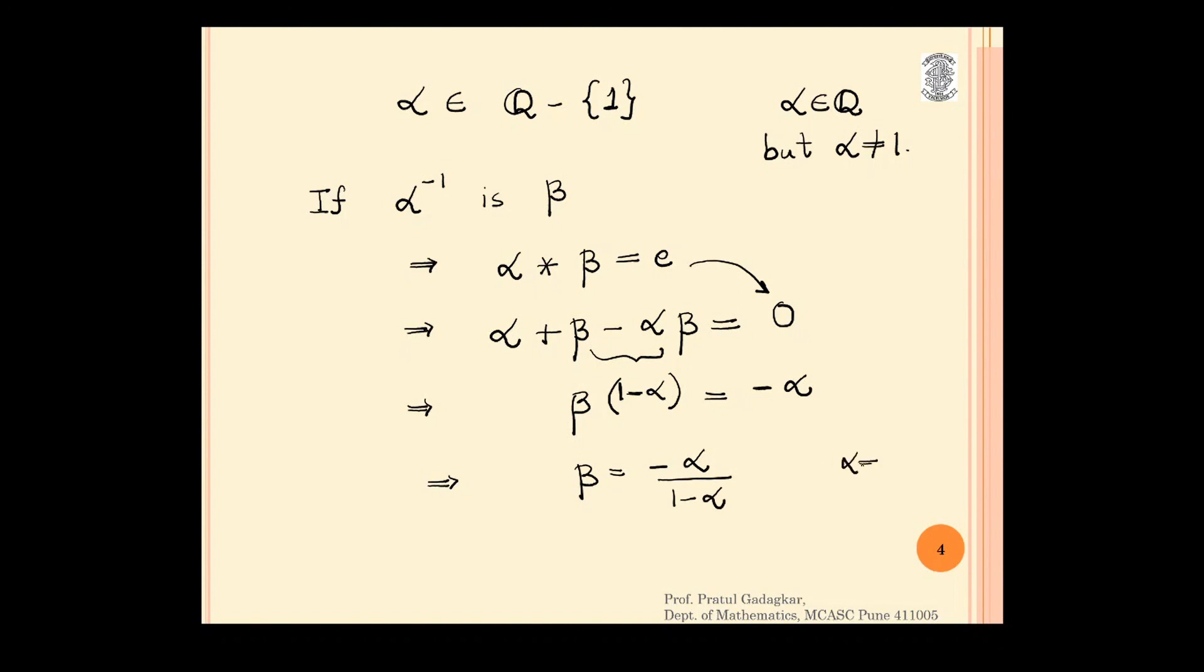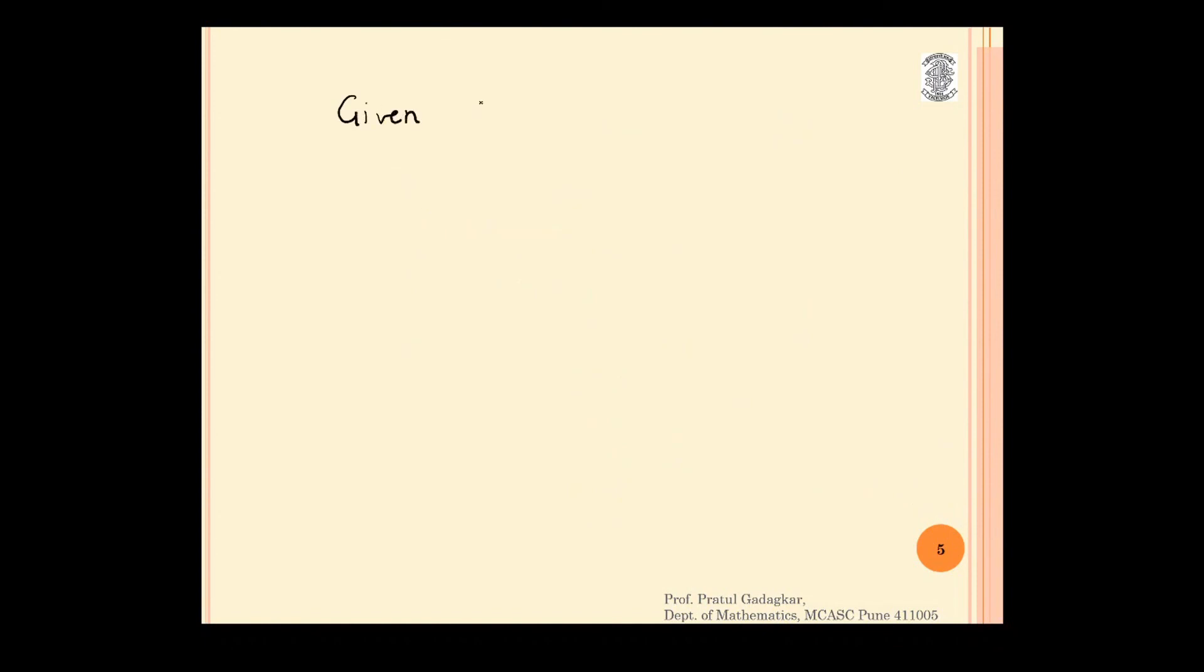Obviously, alpha is not equal to 1. Therefore, 1 minus alpha is not equal to 0. So we could divide it easily. This is the value of beta where beta was nothing but inverse of the element alpha. So we conclude that given alpha belonging to G its inverse which is alpha dash or alpha inverse is given by minus alpha upon 1 minus alpha which we had called beta. This is the inverse of the given element alpha in G. This finishes our exercise.